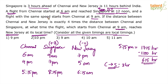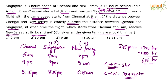Another flight started with the same speed from Chennai at 9 am. The distance from Chennai to New Jersey is 4 times the distance from Chennai to Singapore. If the distance is 4 times, the time taken will also be 4 times. So if Chennai to Singapore takes 3 hours, Chennai to New Jersey will take 3 × 4 = 12 hours.